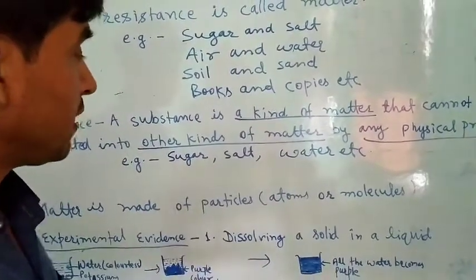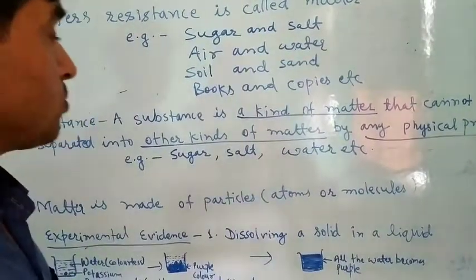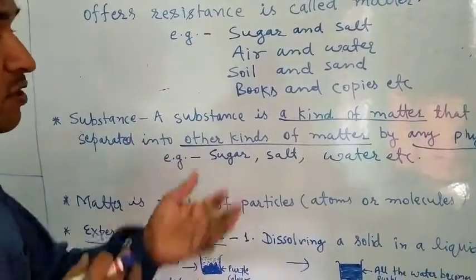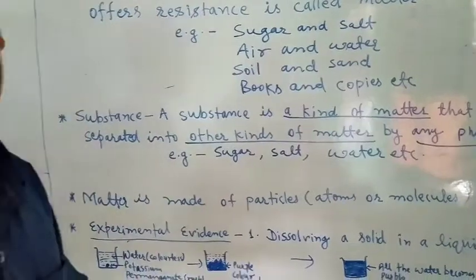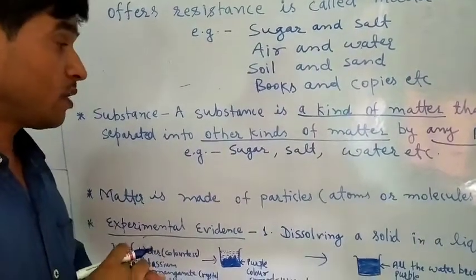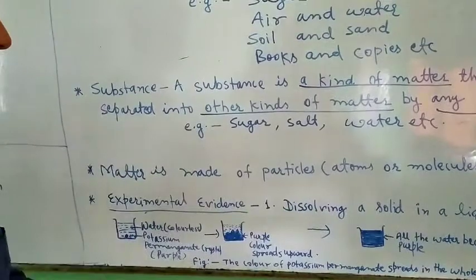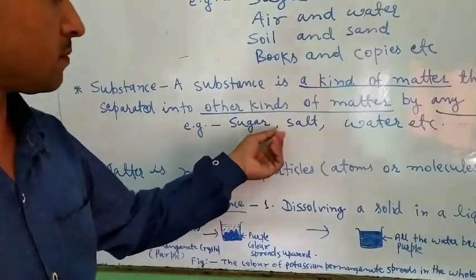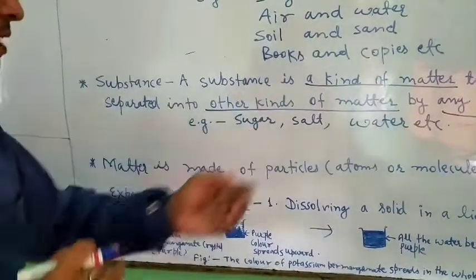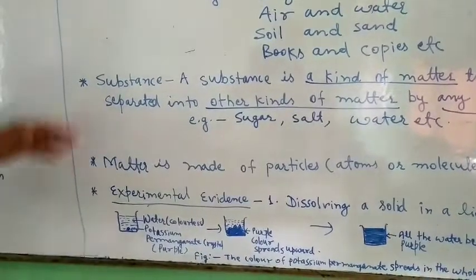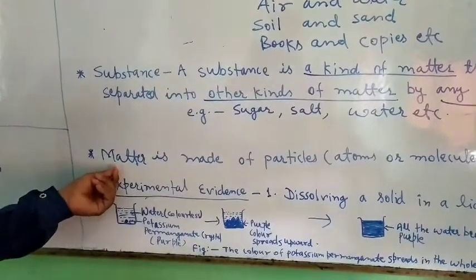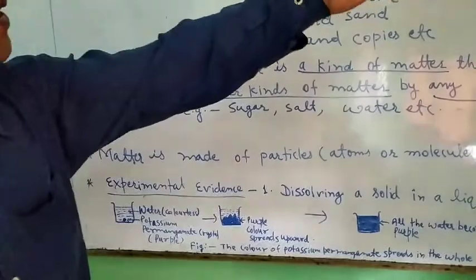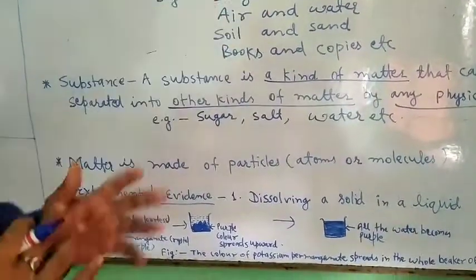Another example is salt and water. They also cannot be separated into elemental form by any physical process — they can be separated only by a chemical process. So we can say that these are examples of substances. Matter is anything which occupies space, has mass and offers resistance.